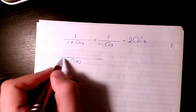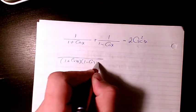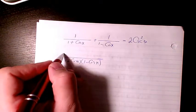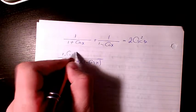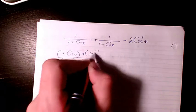It's going to be 1 plus cosine x times 1 minus cosine x and here in the numerator it's going to be 1 minus cosine x plus 1 plus cosine x.